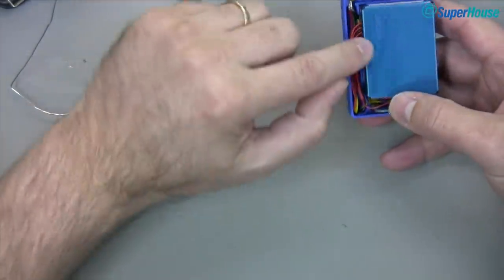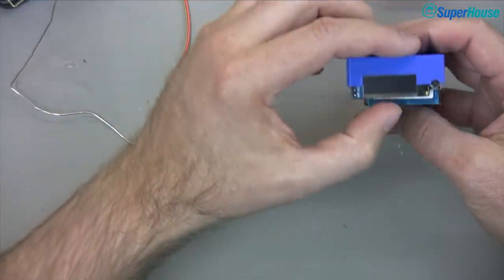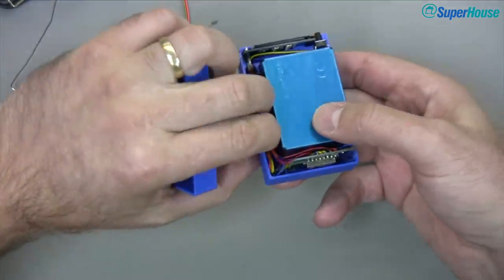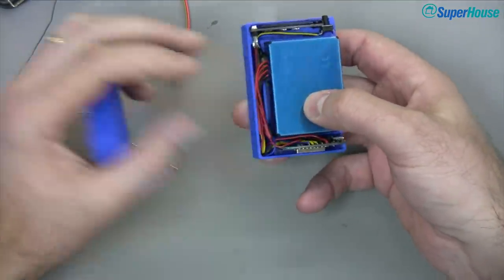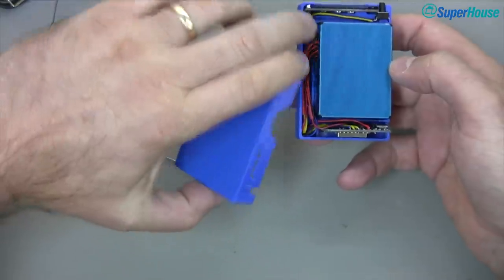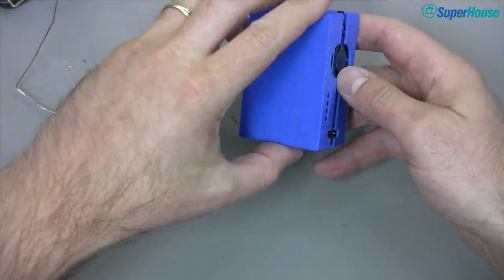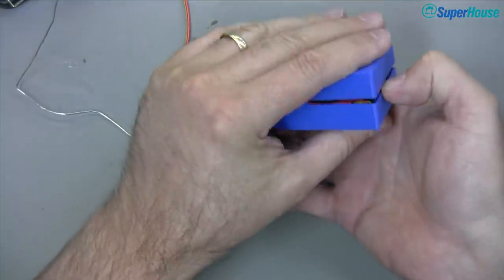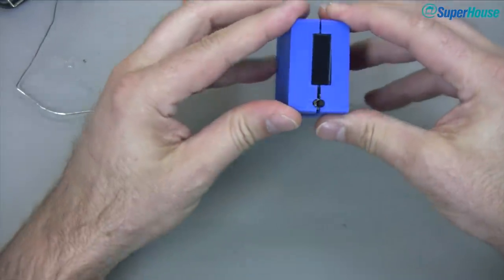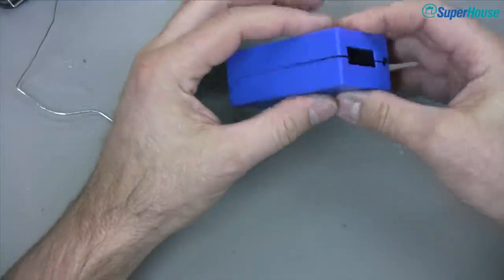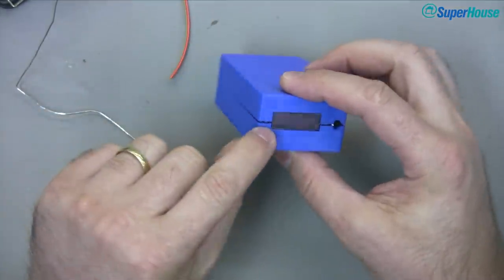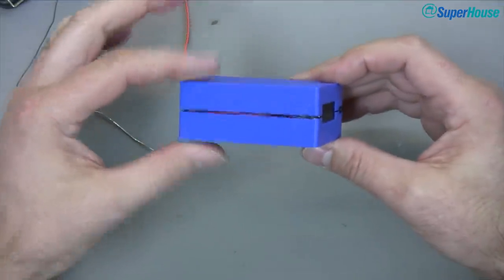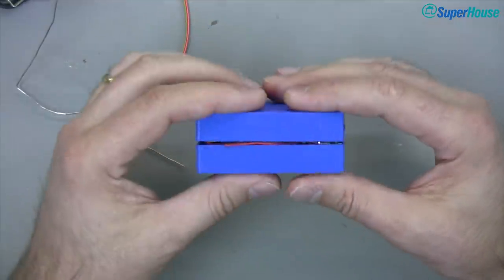And actually since I printed this case I've tweaked the design a little to improve clearance around the OLED so this one's a little bit tight. If you download the version of the case that I'll publish with this episode it's got more clearance around the pins than this one has and then we can slide this over the top. Once again a little bit of jiggling, there are lots of things in there to get in the way.